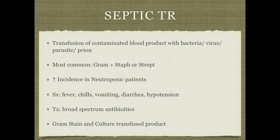Septic transfusion reaction is when blood products come contaminated with a bacteria, parasite, virus, fungus, or prion. That's why people who lived in Europe for more than three months from 1980 to 1999 can't donate blood due to mad cow disease. The most common contaminants are gram-positive staph and strep. You get symptoms of septic shock, treat with broad-spectrum antibiotics, and gram-stain and culture the blood being transfused as well as the patient.